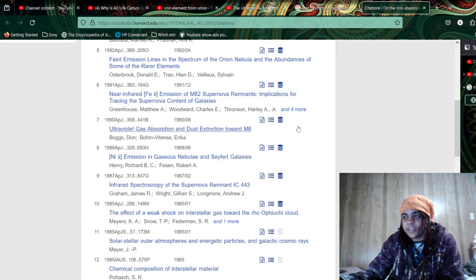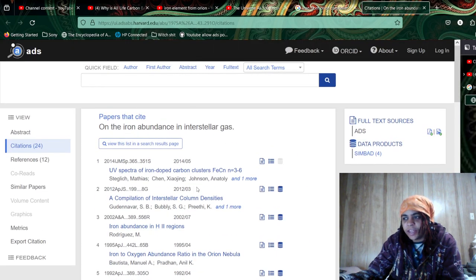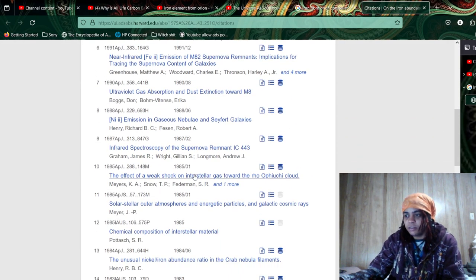And a lot of these are actually old, like 1990, 1991. This is going down the scale of age. Let's see. Solar, stellar, outer atmospheres, and energetic particles, and galactic cosmic rays.